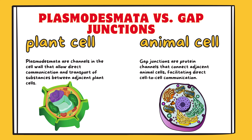Plasmodesmata versus gap junctions. Plant cell: plasmodesmata are channels in the cell wall that allow direct communication and transport of substances between adjacent plant cells. Animal cell: gap junctions are protein channels that connect adjacent animal cells, facilitating direct cell-to-cell communication.